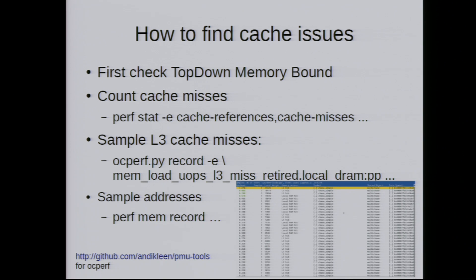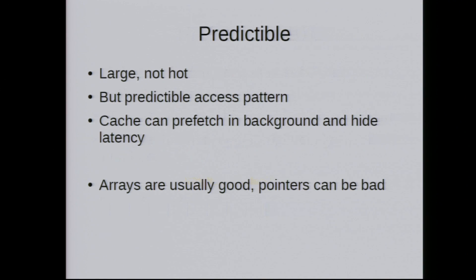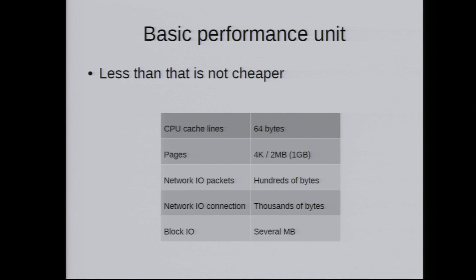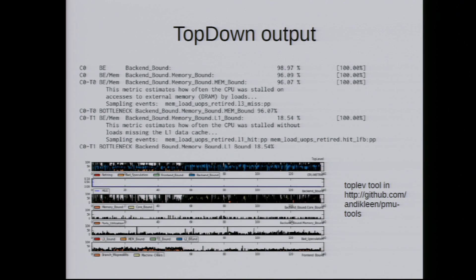Also, top-down can help find where L3 cache misses occur. For every bottleneck you find, the tool can show you the corresponding sampling events. There's even an option called run-sample that directly samples it afterwards, so it can be somewhat automated to find the right event to sample for.